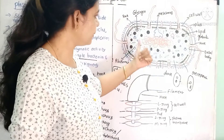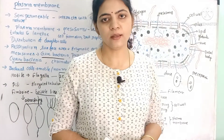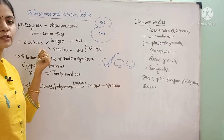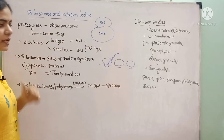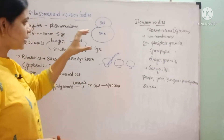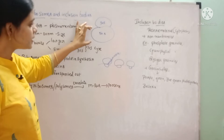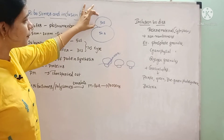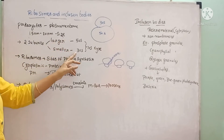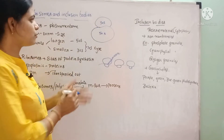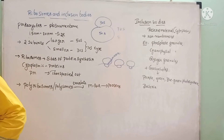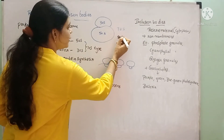In the next topic, we study ribosomes and inclusion bodies present in bacteria. Ribosomes in prokaryotes are associated with the cytoplasm and plasma membrane. They are 15–20 nm in size and have two subunits: large subunits (50S) and small subunits (30S). So prokaryotes have 70S ribosomes, while eukaryotes have 80S ribosomes.